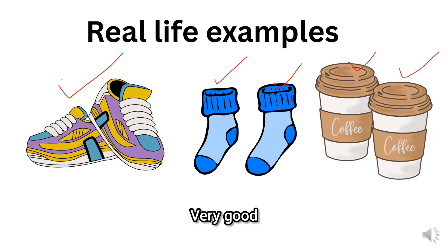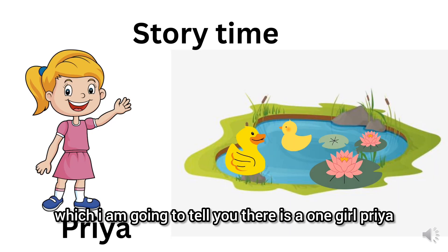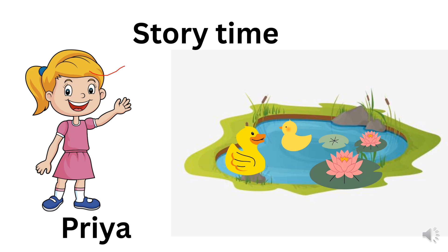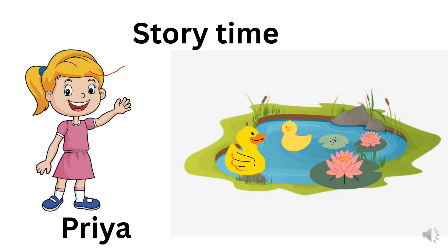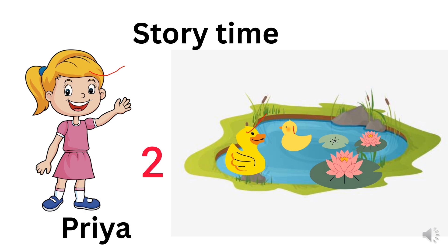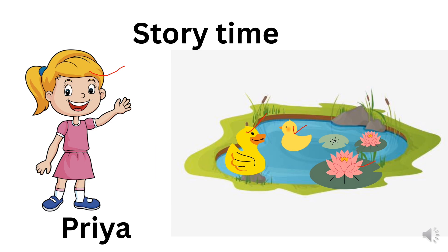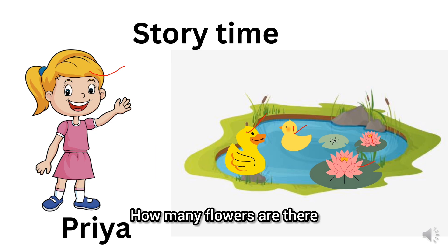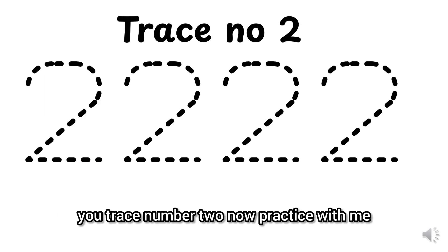Very good. Listen to an interesting story I am going to tell you. There is one girl, Priya. She looks at the pond and sees two ducks. How many ducks are there? Two ducks and two flowers. How many flowers are there? Two flowers. Can you trace number two now?